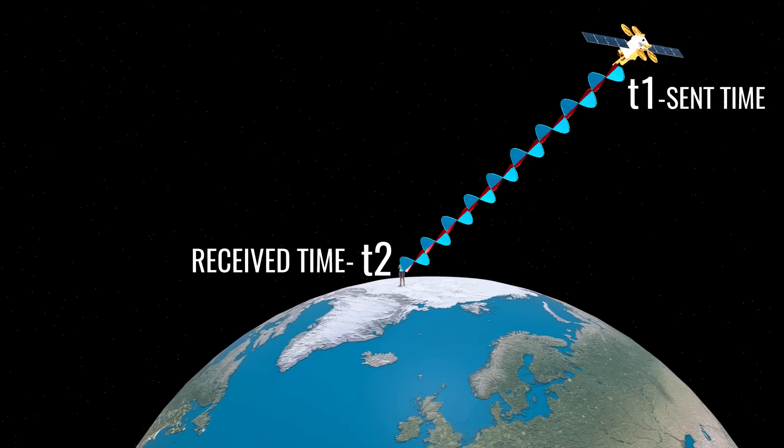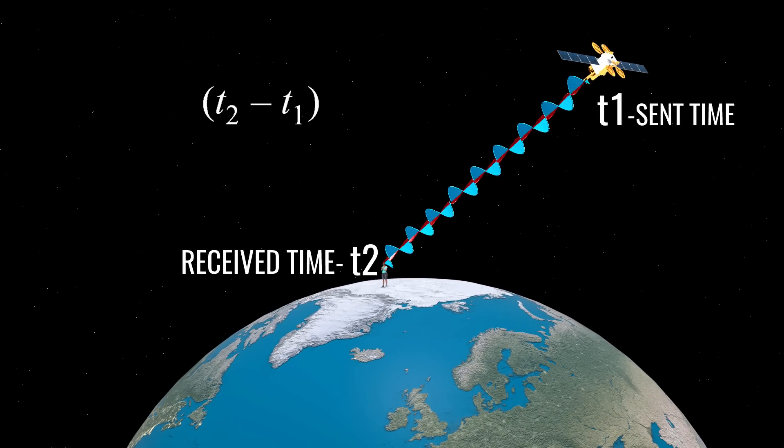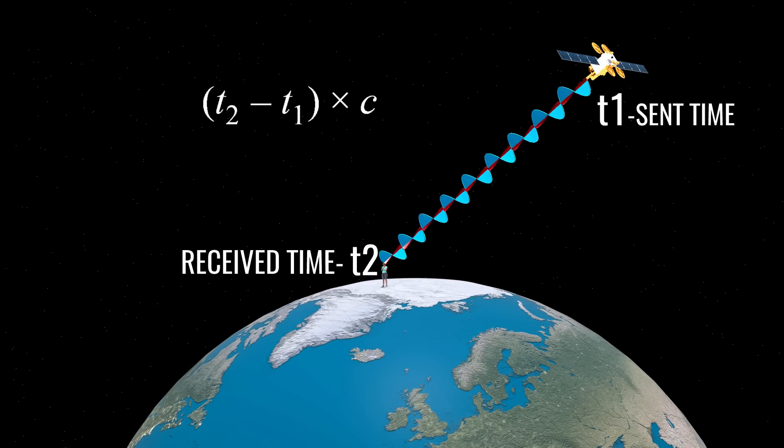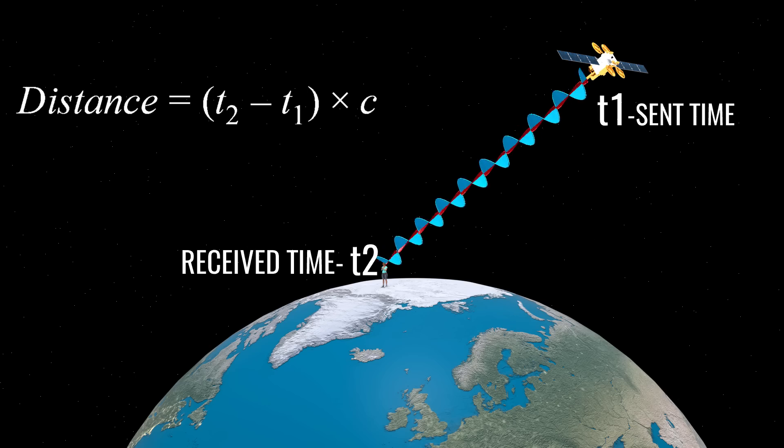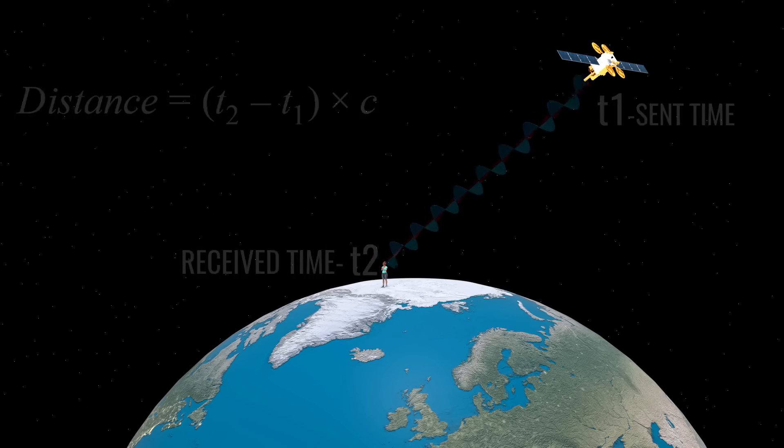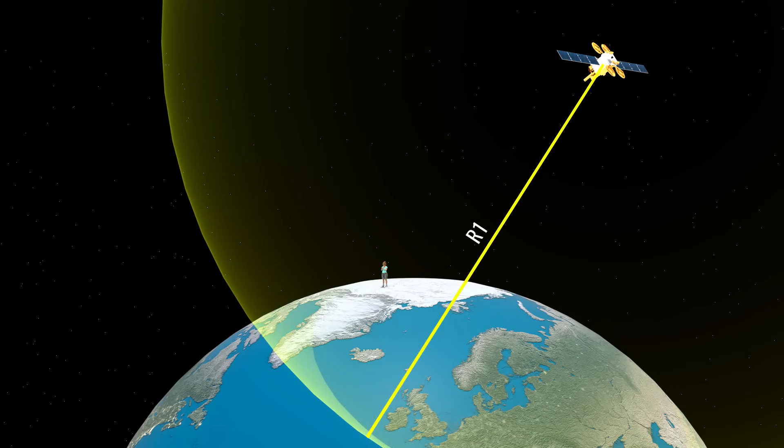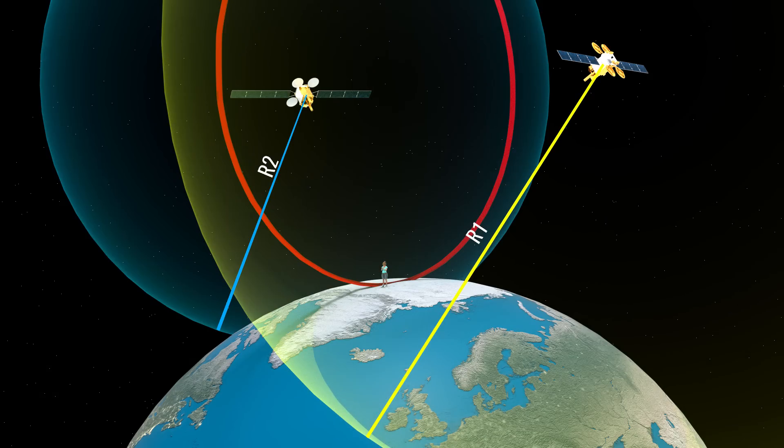By finding out the difference between the sent and received times and multiplying it by the speed of light, you will be able to find out the distance between you and the satellites. Since the satellite has already sent you its coordinate, you can easily build a sphere around the satellite's center point and find out your position, as explained before.